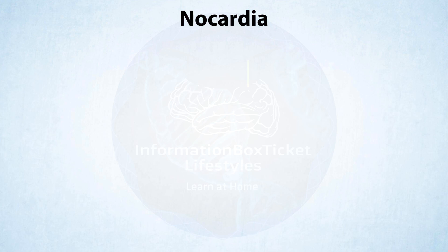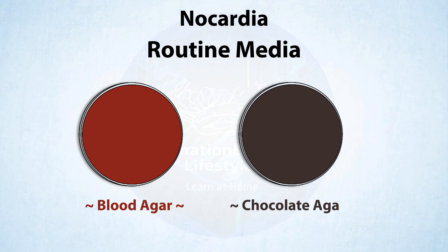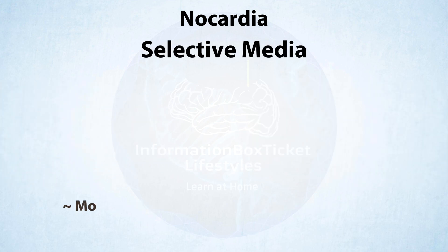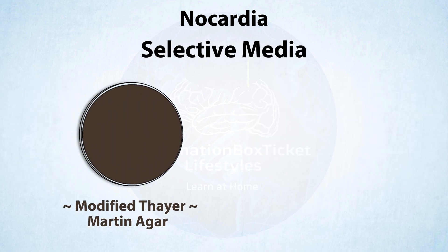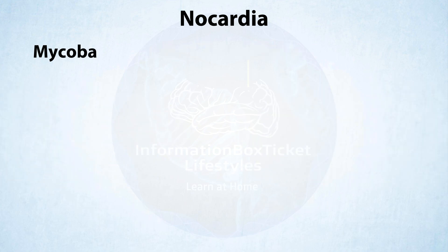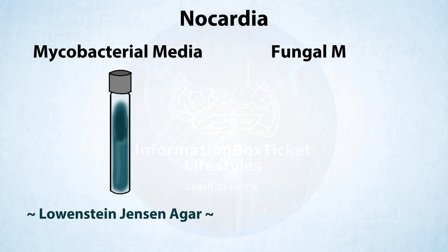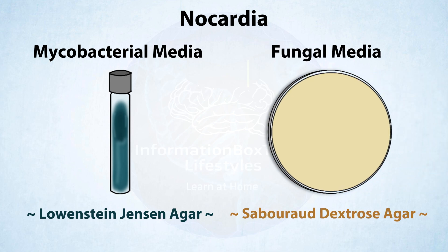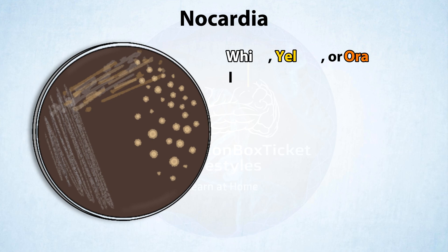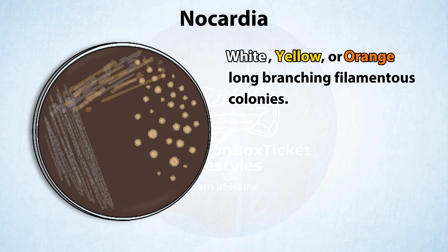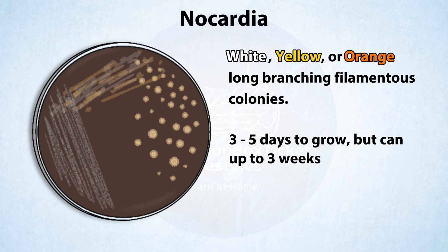Finally, Nocardia species may grow on ordinary medium like blood agar or chocolate agar, selective media like modified Thayer-Martin agar or BCYE agar, mycobacterial media like Lowenstein-Jensen agar, and fungus media like Sabouraud-Dextrose agar. Nocardia produces white, yellow, or orange long-branching filamentous colonies with a powdered appearance that typically take three to five days to grow, but can sometimes take up to three weeks.